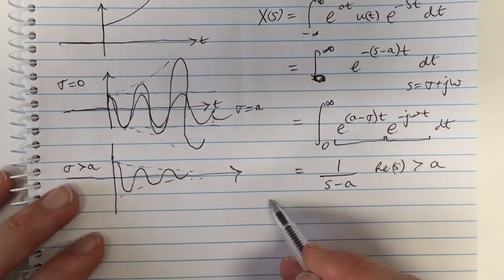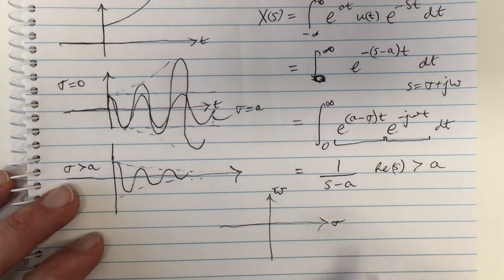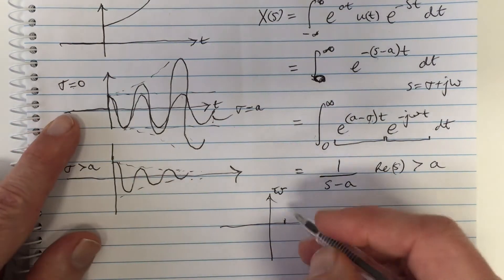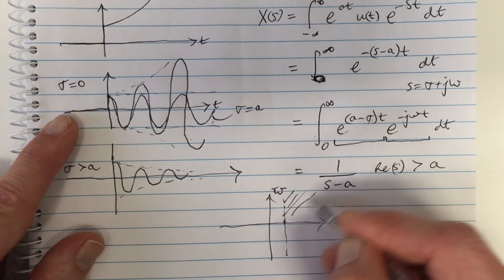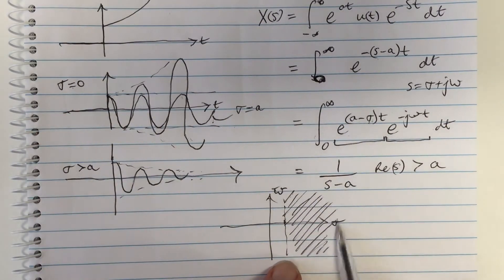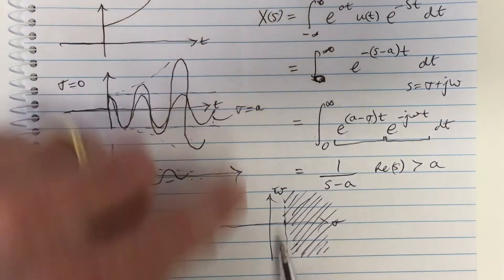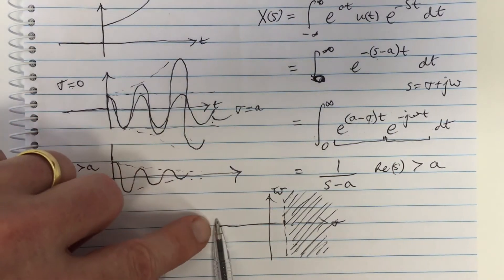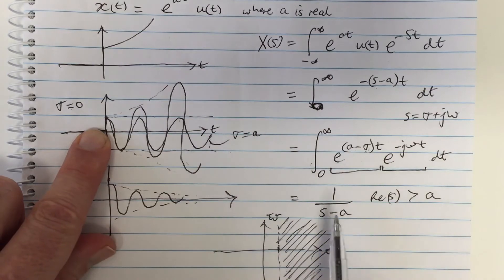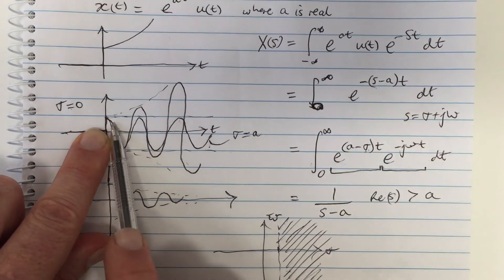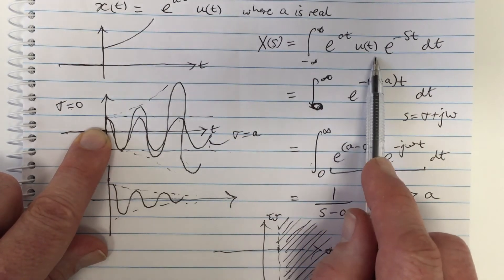We can plot this as a region of convergence in the s-plane, where the horizontal axis is the real part (σ) and the vertical axis is the imaginary part. For a positive, the region where σ is greater than a is the entire half-plane to the right of a. For all values of s in this region we can evaluate the Laplace transform, but for values to the left we cannot — because there isn't enough damping from the real part of the exponential weighting in the Laplace transform.